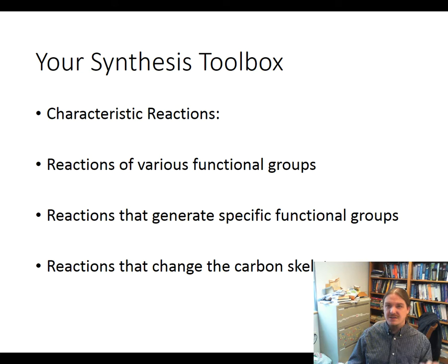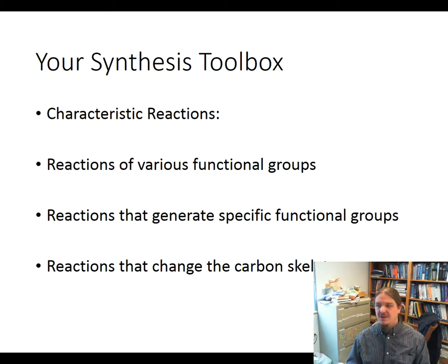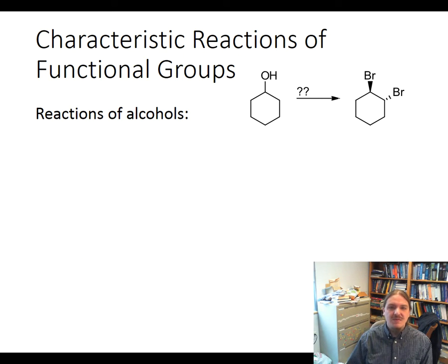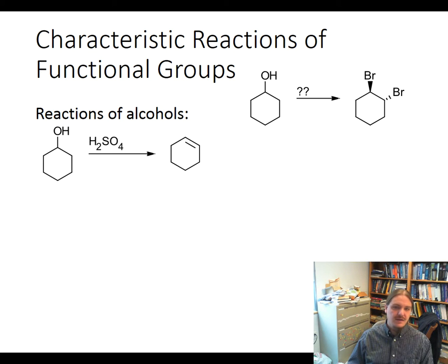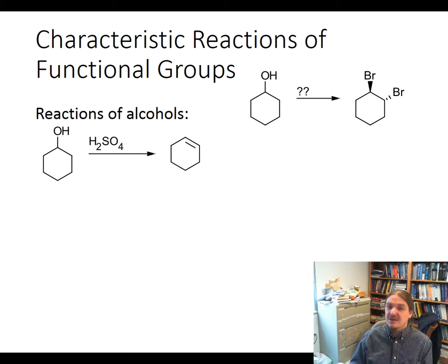Let's look at some simple examples. I'm not going to go through any complete synthesis problems here, but just examples of how you can start thinking about your synthesis toolbox in this way. As an example of characteristic reactions of functional groups, what if you were given this particular synthesis problem? You're interested in transforming cyclohexanol into trans-1,2-dibromocyclohexane. If we're thinking about the characteristic reactions of functional groups, you want to look at those reactions that alcohols undergo. Depending on where you are in your studies and what you've covered, you may recognize some or all of these reactions — and if you don't, don't worry, they will be coming up soon.